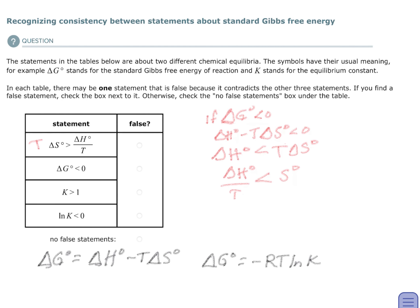So I'm going to set that equal to true. Now, delta G is less than zero. I'm assuming that. So let's go on to the next one.